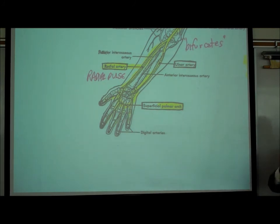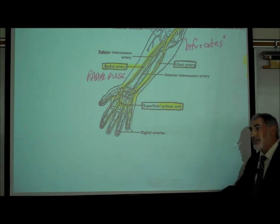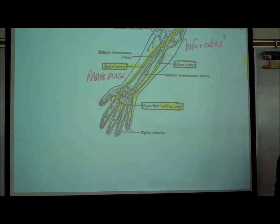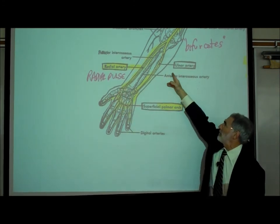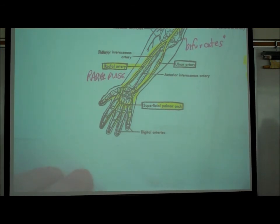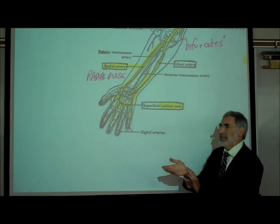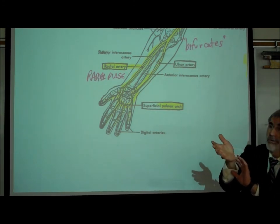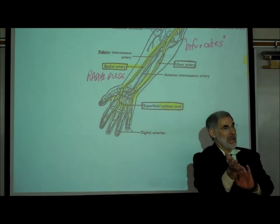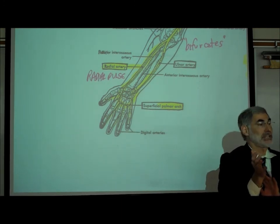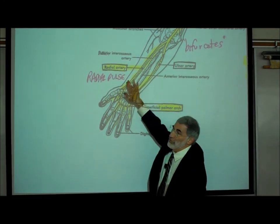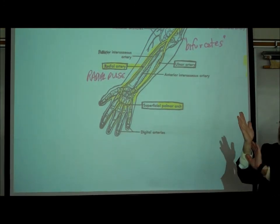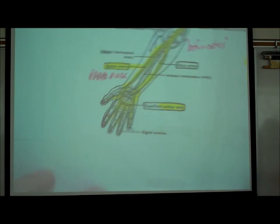Any time we explain where anything is, we assume we're talking about the anatomic position. The radial artery runs along the thumb or lateral side; the ulnar artery runs along the little finger or medial side. If you've ever taken a radial pulse — felt your pulse at the wrist area to find your heart rate — you're actually palpating the radial artery on the thumb side, running around the radial bone.